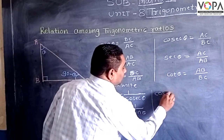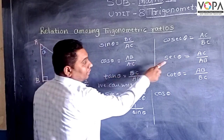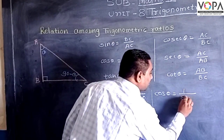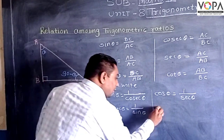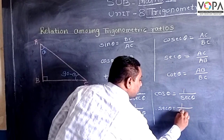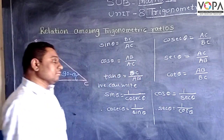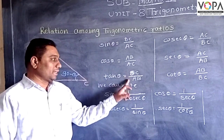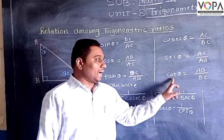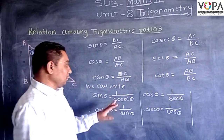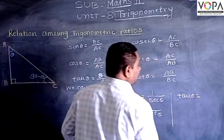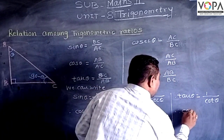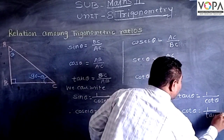In a similar way, looking at the ratio for sec theta — sec theta is equal to 1 upon cos theta. Also, cosec theta is equal to 1 upon sin theta. For tan theta, the ratio is BC upon AB, that is opposite side upon adjacent side, and cot theta is adjacent side upon opposite side. So tan theta is equal to 1 upon cot theta, and cot theta is equal to 1 upon tan theta.